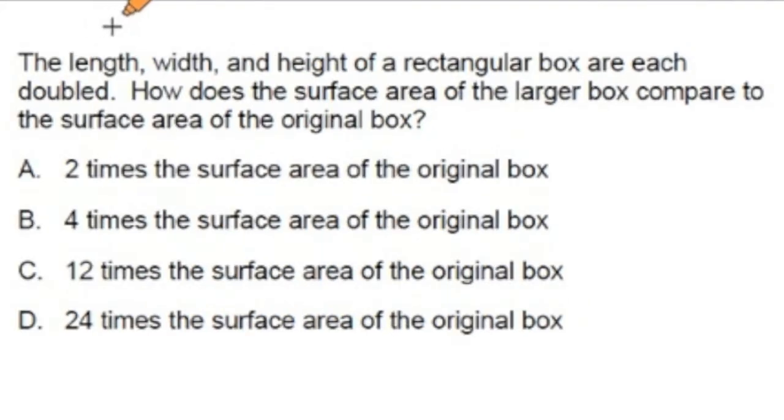It says for number 32, the length, width, and height of a rectangular box are each doubled. How does the surface area of the large box compare to the surface area of the original box? Is that large box 2 times the surface area of the original, 4 times, 12 times, or 24 times?